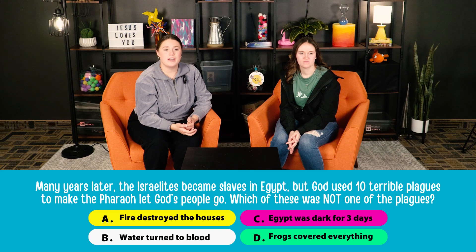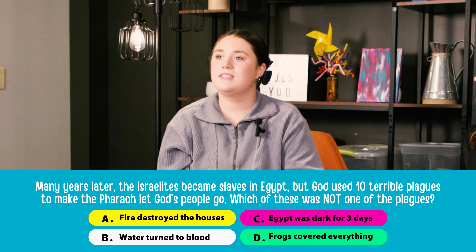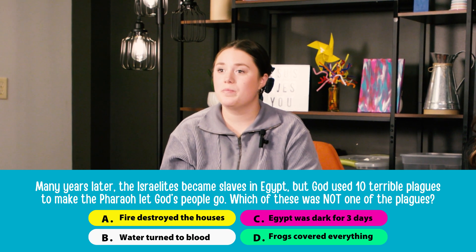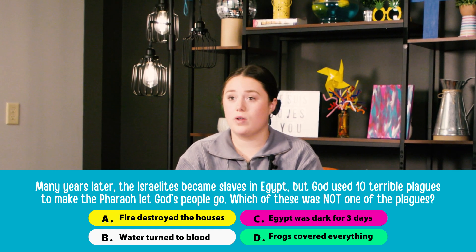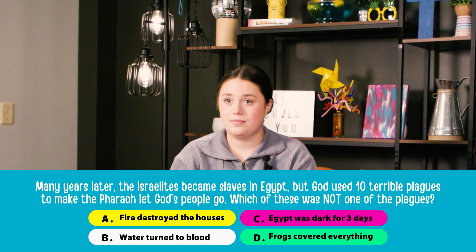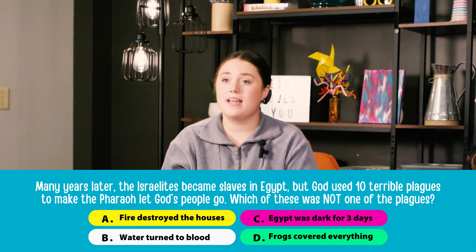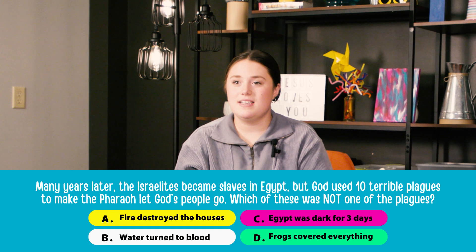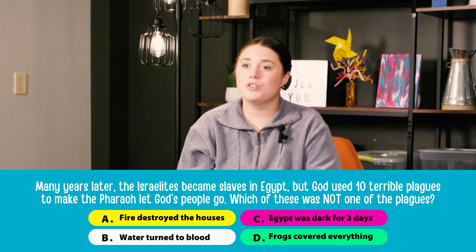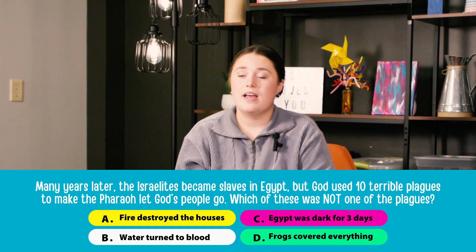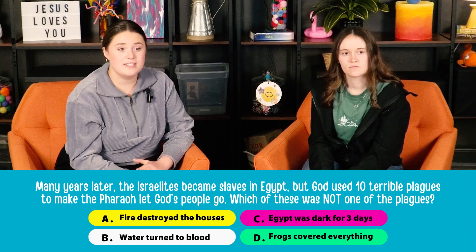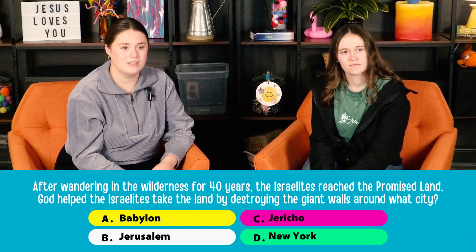Many years later, the Israelites became slaves in Egypt, but God used 10 terrible plagues to make the Pharaoh let God's people go. Which of these was not one of the plagues? A: fire destroyed the houses. B: water turned to blood. C: Egypt was dark for three days. And D: frogs covered everything. The right answer is A — fire destroyed the houses.